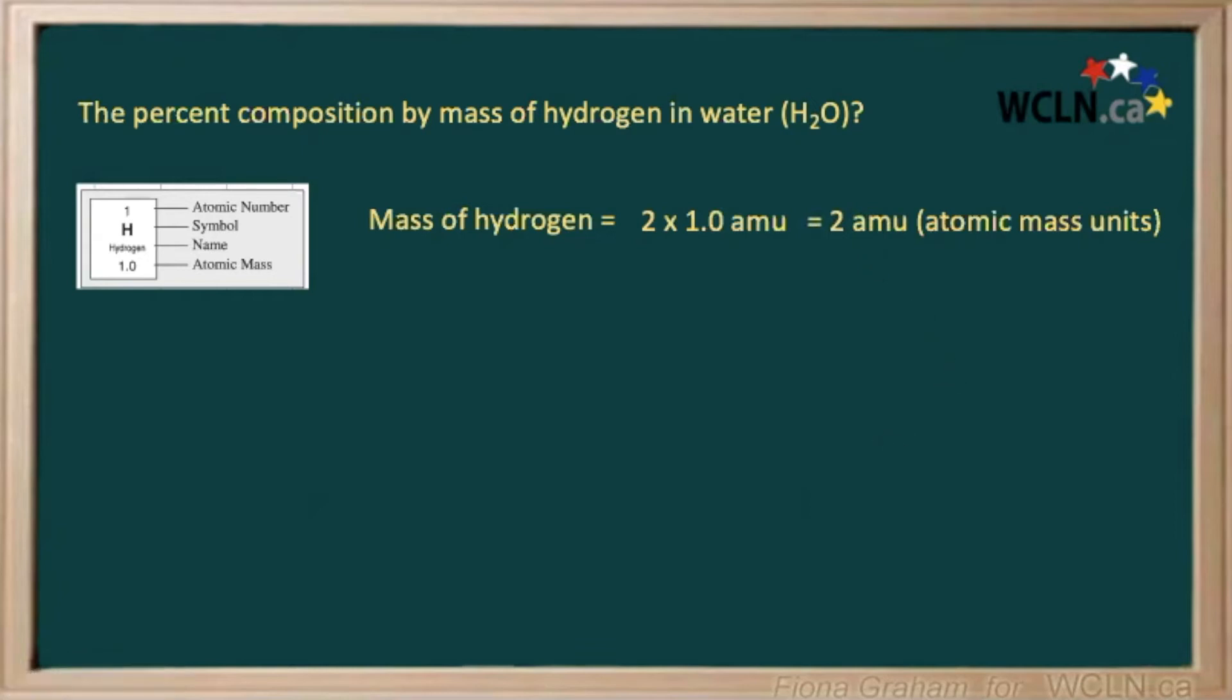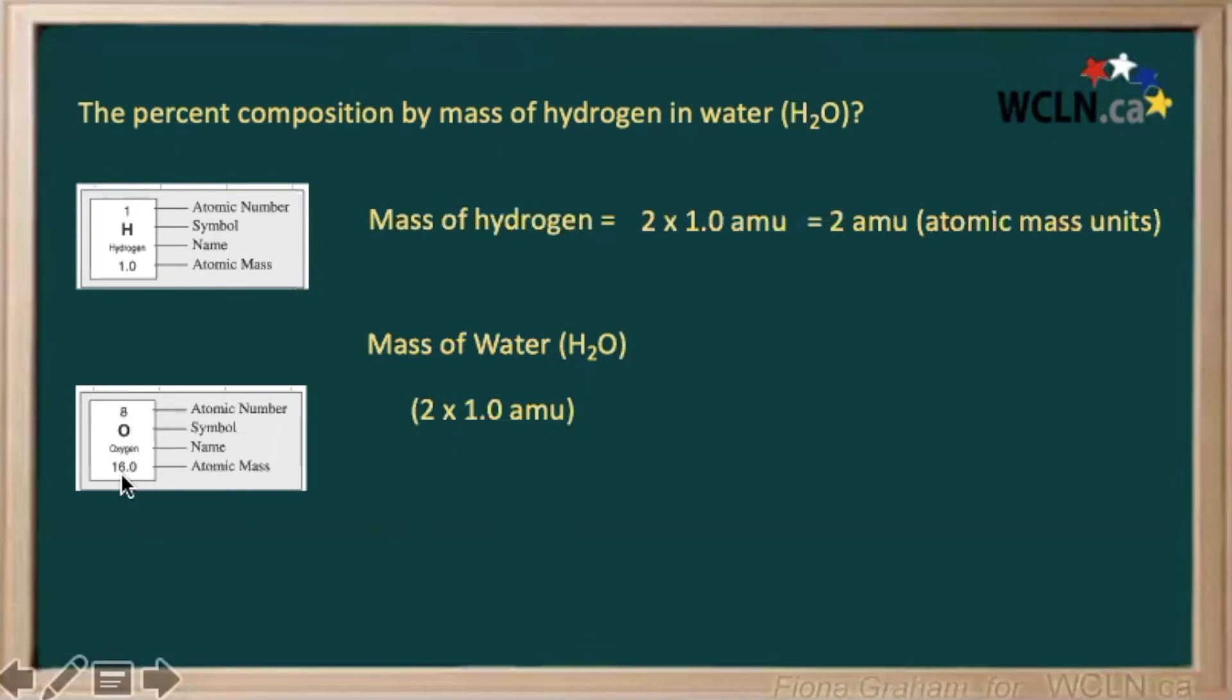Now we have to calculate the mass of our water, H2O. We know that our hydrogen has a mass of 1, and we have 2 of them. Our oxygen has a mass of 16, and we have 1 atom of oxygen. 1 times 16, giving us a total of 18 atomic mass units for all of our water.